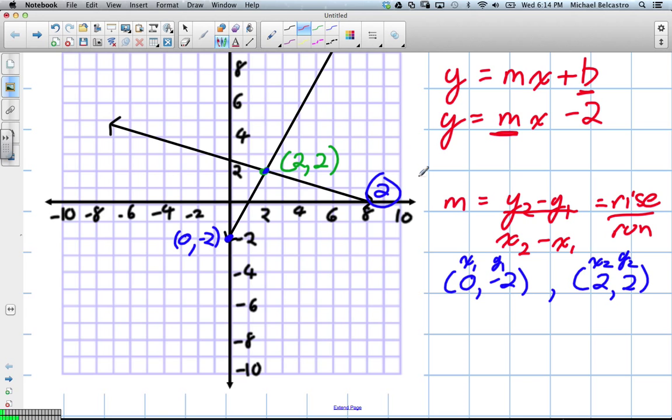When we plug it into our slope formula, m equals y2 is 2, subtract y1 is negative 2. So this is a little tricky. It's 2 subtract negative 2. We might need a calculator for that one. And then on the bottom we have x2, which is 2, subtract x1, which is 0.